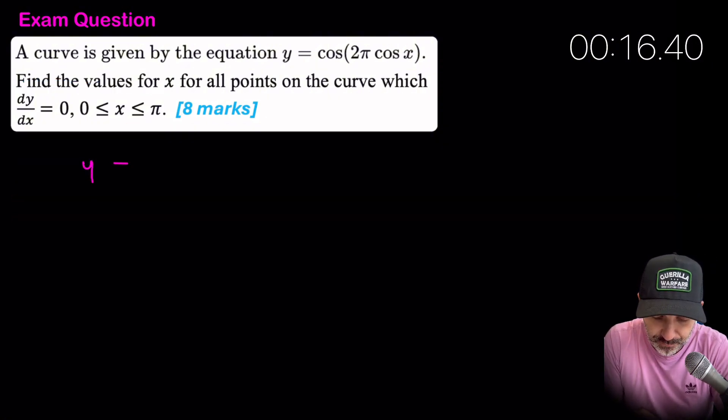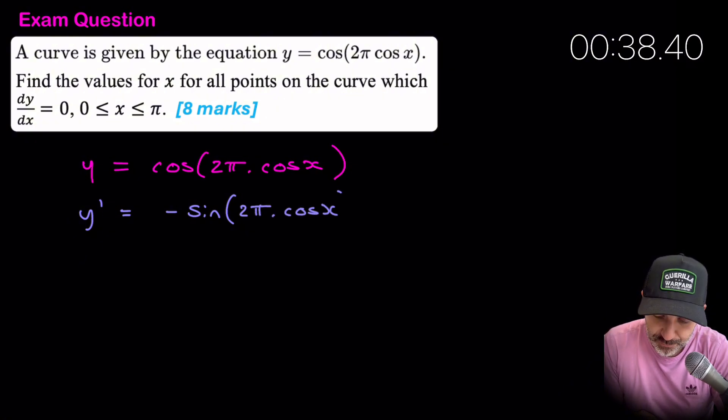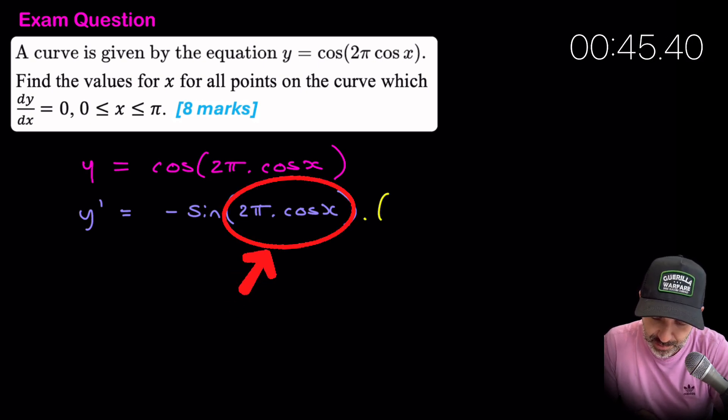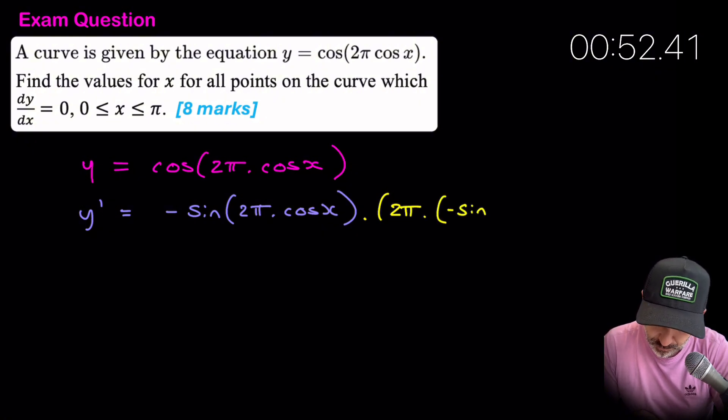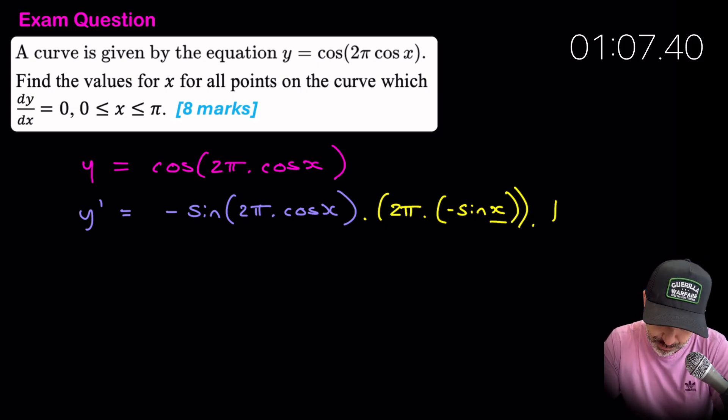Okay, so we have y is equal to cosine 2π, which is just a constant, times by cosine x again. So when we differentiate this with respect to x, we'll get y prime. Now the derivative of cosine is minus sine 2π. Now this stays the same. Remember, this is part of chain rule. This stays the same. But now we must multiply through by the derivative of the bracket. Now the derivative of the bracket will actually be 2π, derivative of cosine is minus sine x.